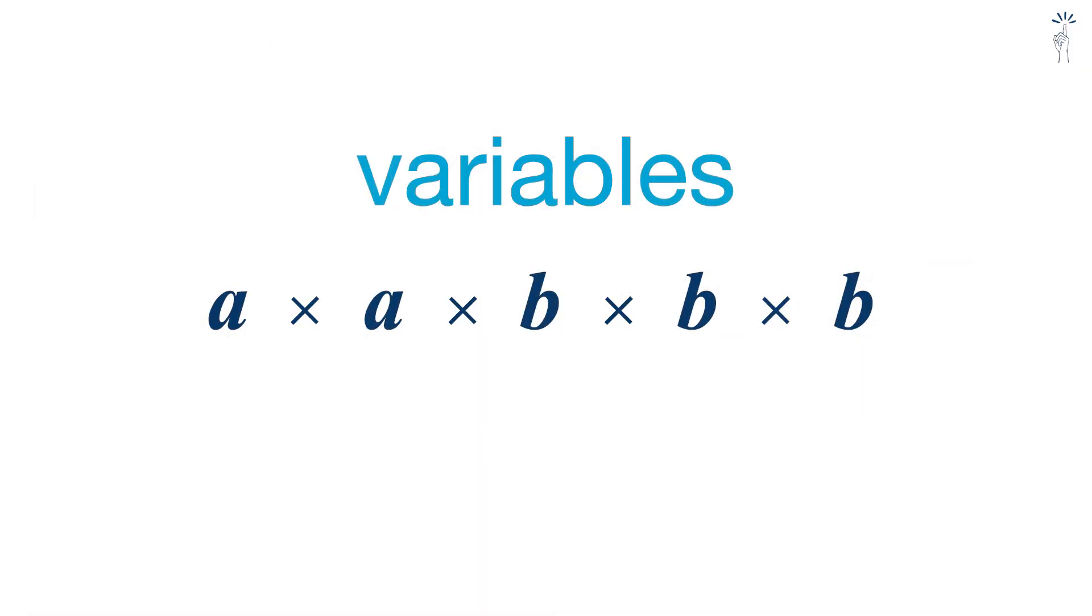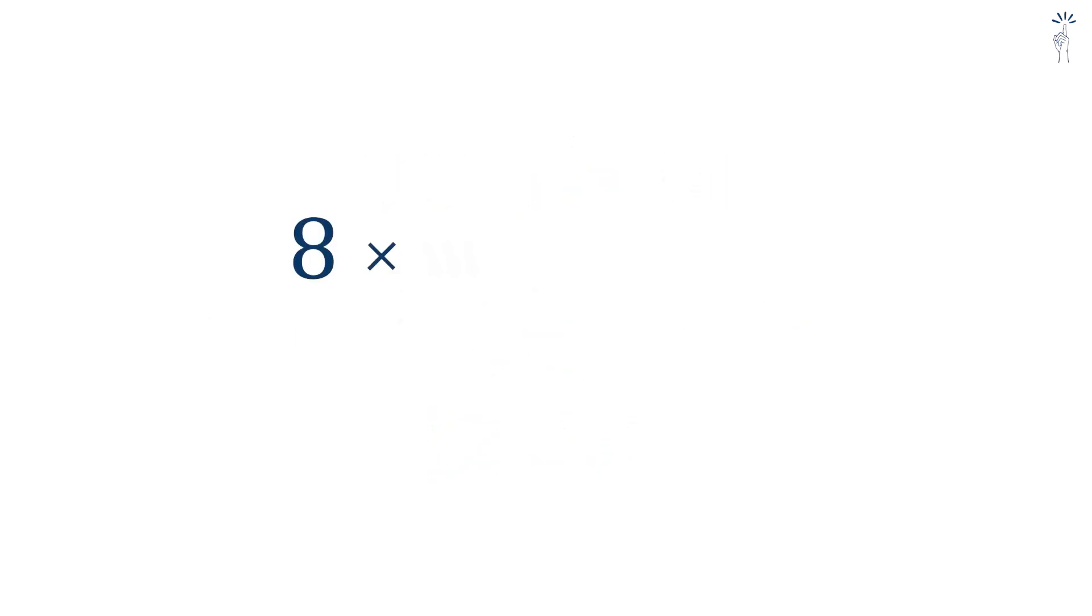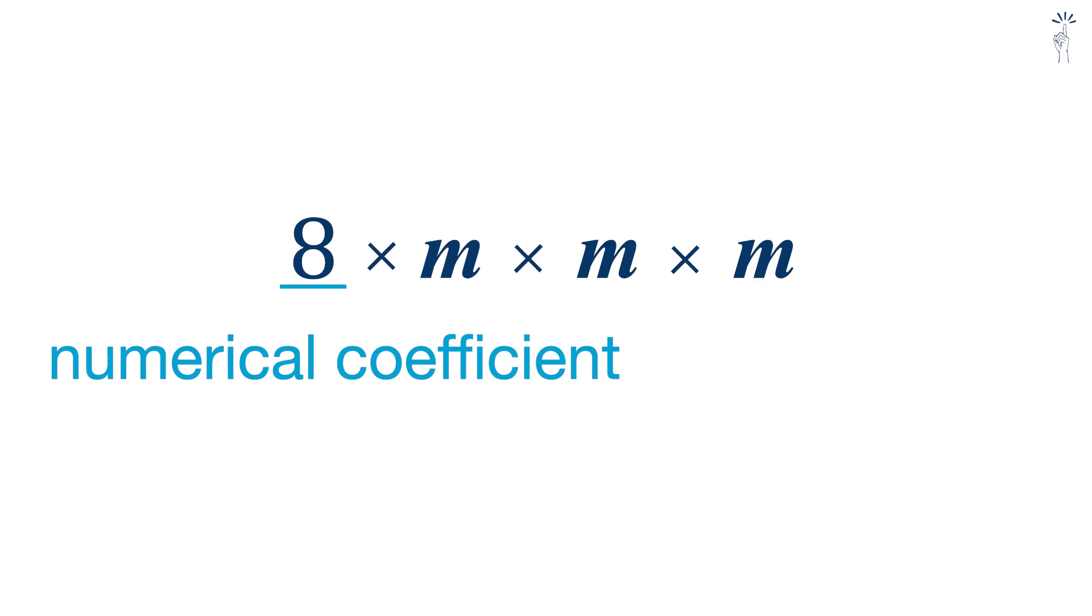Up to now, we've only worked with variables. But in algebra, we often see a number in front of the variables. For example, 8 times m times m times m. This number is called the numerical coefficient. We call it that because it multiplies together with the variables. It's the number part of the expression.